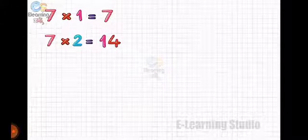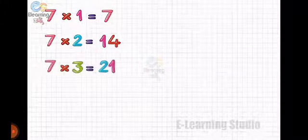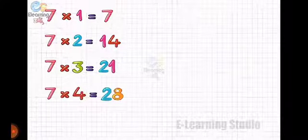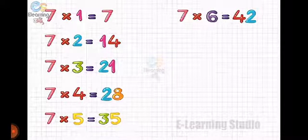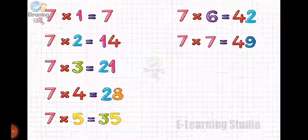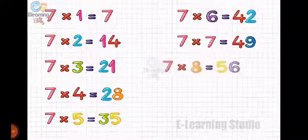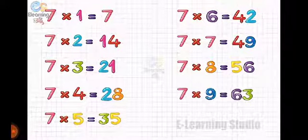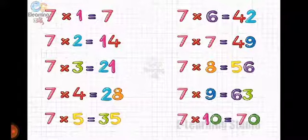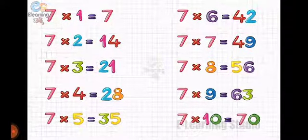Now we are going to repeat the tables — repeat with me. Seven ones are seven. Seven twos are fourteen. Seven threes are twenty-one. Seven fours are twenty-eight. Seven fives are thirty-five. Seven sixes are forty-two. Seven sevens are forty-nine. Seven eights are fifty-six. Seven nines are sixty-three. Seven tens are seventy. We have completed the table of seven!